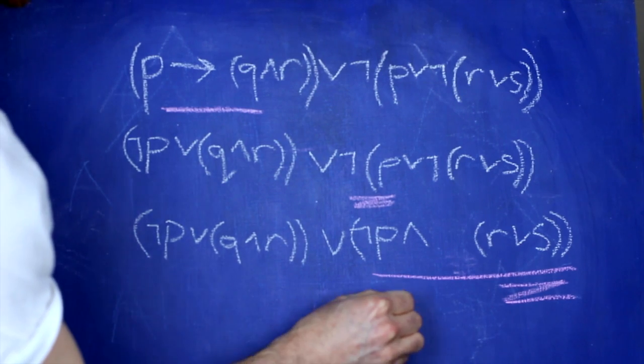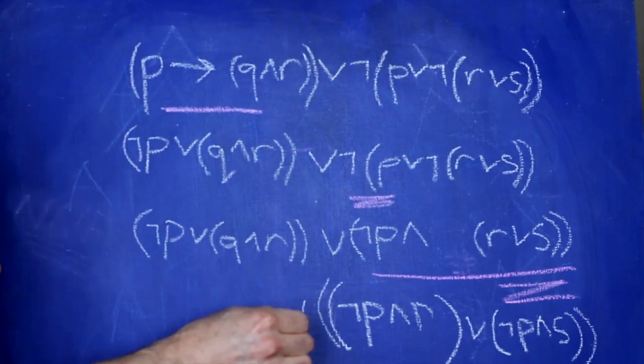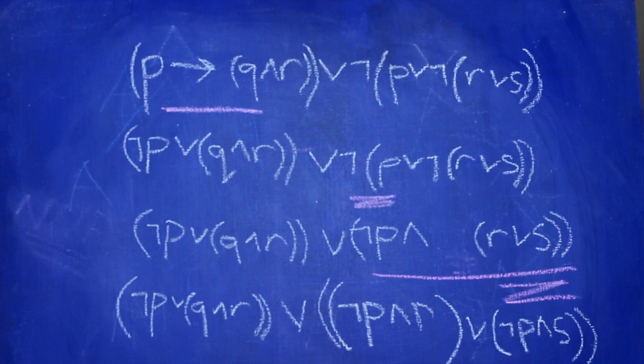That's no good. So we have to distribute the conjunction over the disjunction, and we end up with this. Now that sentence is in disjunctive normal form, so we're done.